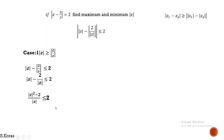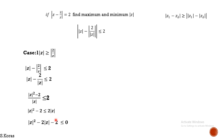Moving Z to the other side gives 2 times modulus of Z, and moving the 2·|Z| term gives minus 2 times modulus of Z, with the inequality becoming less than or equal to 0. Letting T equal modulus of Z, the equation becomes T² minus 2T minus 2 ≤ 0. This is our first case.